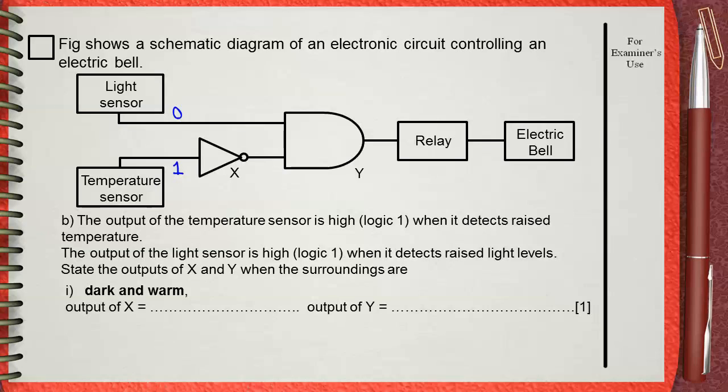The zero of the light sensor is directly fed to the AND gate. The 1 of the temperature sensor will be inverted by X, the NOT gate, so it will be zero.